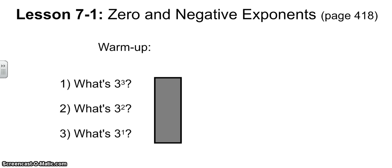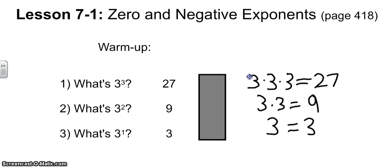Hopefully it's review for you that 3 to the third power is 3 times 3 times 3, three 3's multiplied together, that equals 27. Three to the second power then is just two 3's multiplied together, 3 times 3, that equals 9. And 3 to the first power is just one 3, so that obviously equals 3. 3 to the third power equals 27, 3 to the second power equals 9, and 3 to the first power equals 3. Hopefully that's review for you, there's our three answers right there.